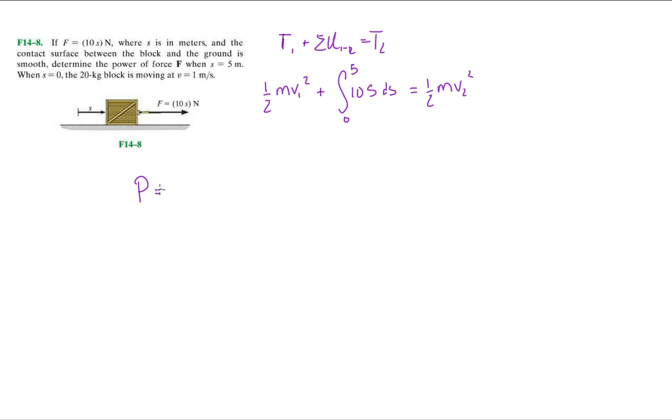So we know the power output is going to be your force times your velocity. It's F V cosine theta. But we know that these two things, the velocity is going in this direction, the force going in the same direction, so cos theta is 0.